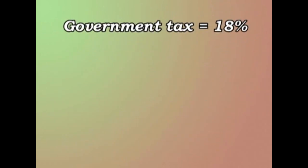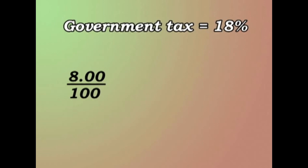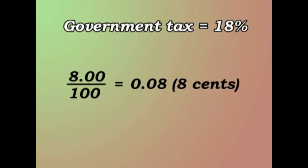The government tax is 18%. Now, 18% of $8.00. First of all, we divide $8.00 by 100 to find out what 1% is. If we divide something by 100, we move the decimal point two places to the left. So 8.00 becomes 0.08.